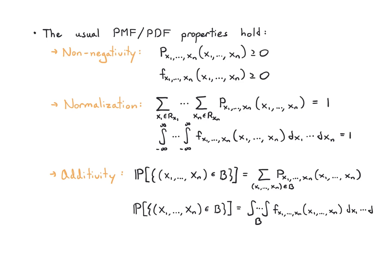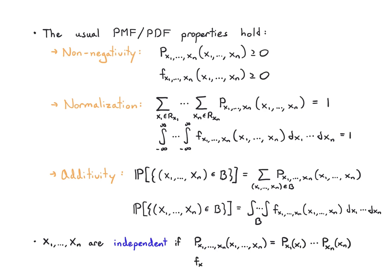We also have the idea of independence, and independence here is the same as for pairs of random variables. You just need that the joint PMF factors into the product of the marginals, or that the joint PDF factors as the product of the marginals. If that's true, the variables are independent.